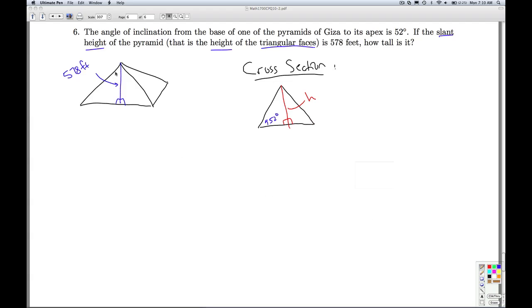Where does the slant height come into play? Well, that's the distance along the face of the pyramid. So, what I have in here is a little right triangle. This is the side I'm trying to find. That's the side I know, and that's an angle I know.